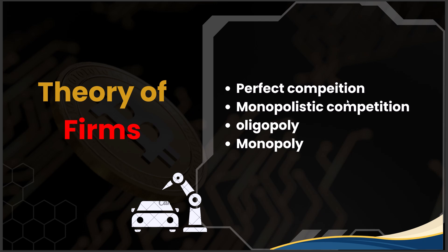In oligopoly, few influential producers dominate the market, with duopoly being the most minimal form. Producers have substantial knowledge about competitors' actions and can predict responses to strategy changes. Products have complex differentiation, prices are influenced by large producers, and barriers to entry are very high. Phone manufacturers like Samsung, Apple, and LG are examples — each has their own differentiation and specifications.